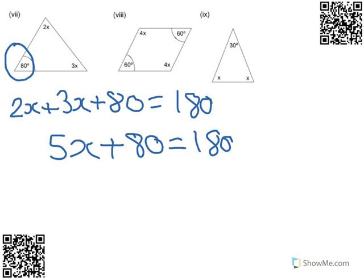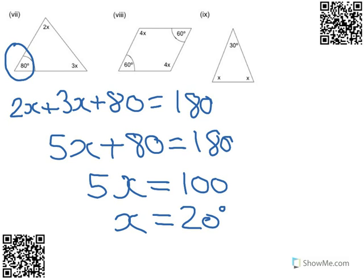Take away 80 from both sides, I get 5x equals 100. I need to divide both sides by 5, so I get x equals 20 degrees. Done.